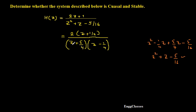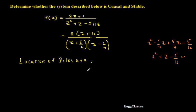Now I need to find the poles, because the poles are what determine the properties of the system. Poles lie in the denominator; in the numerator we have zeros. So let me find the location of the poles. The first pole is at Z = -5/4.